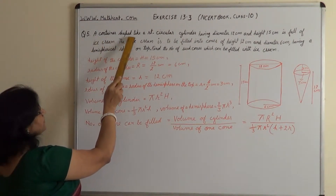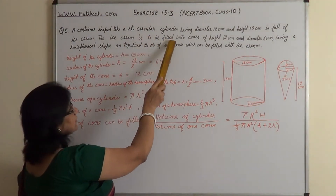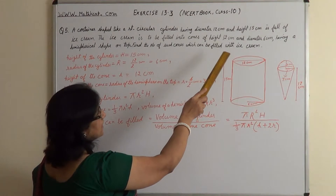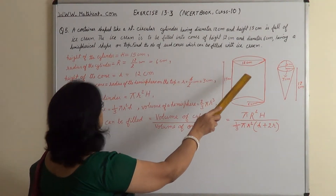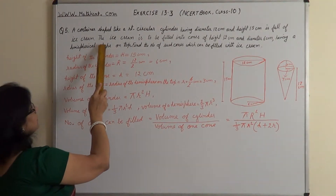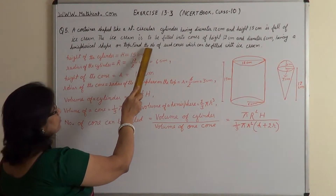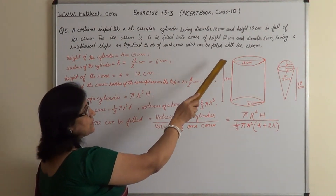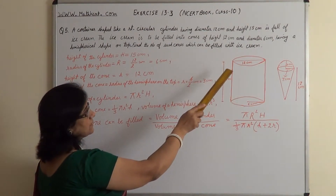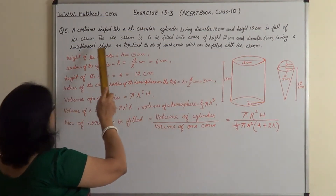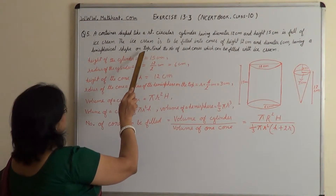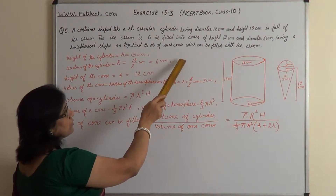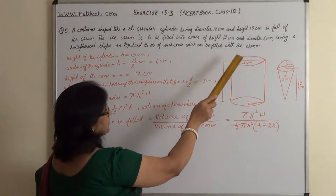A container shaped like a right circular cylinder has a diameter of 12 cm and height 15 cm and is full of ice cream. The ice cream is to be filled into cones of height 12 cm and diameter 6 cm, having a hemispherical shape on top. Find the number of such cones which can be filled with ice cream.